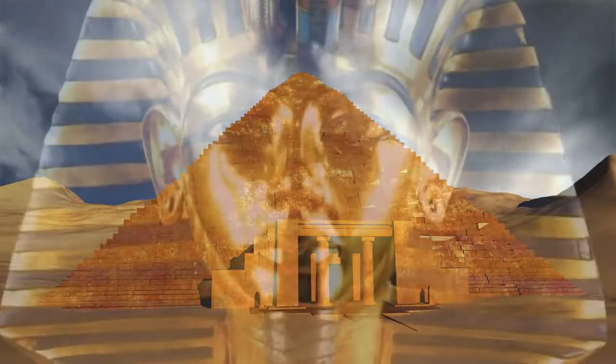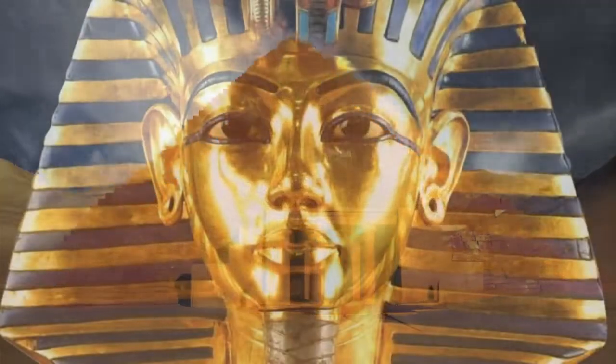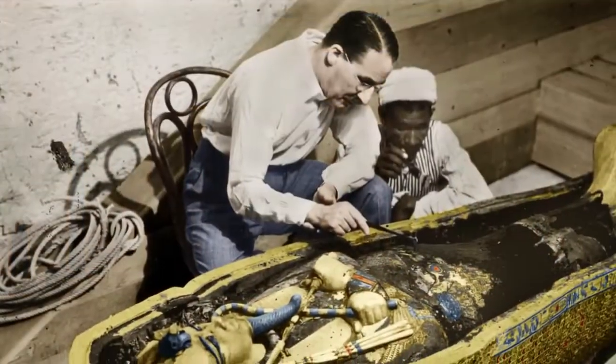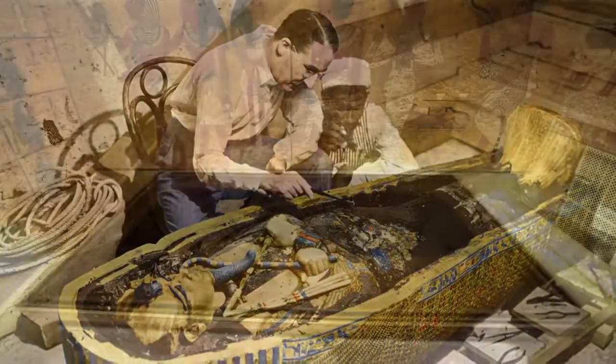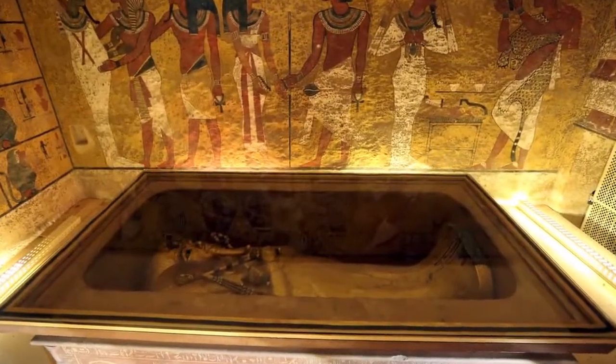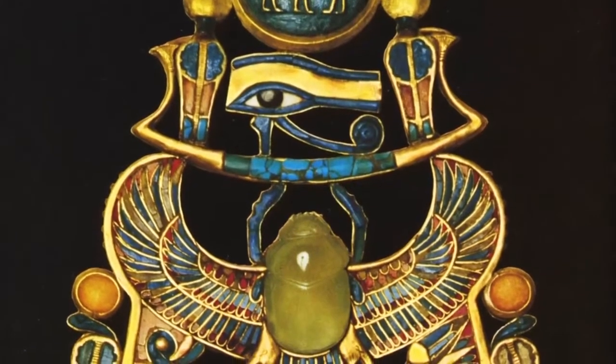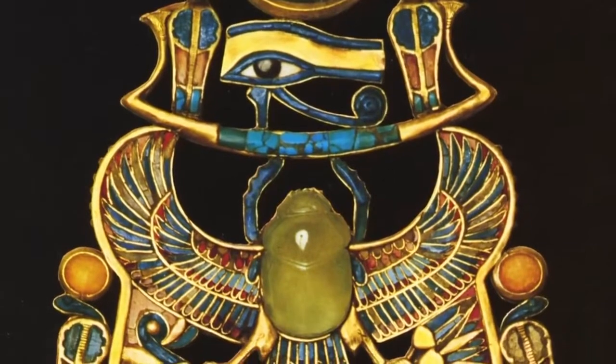One such example is the mysterious necklace found in King Tut's tomb. It was glass, and not just any glass, but glass derived from an enigmatic source.